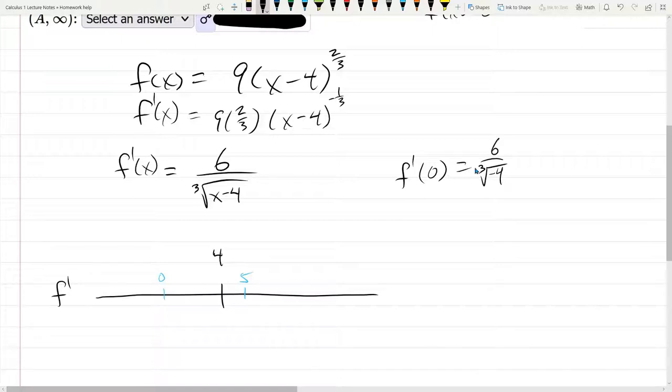Now this may scare you, it just scared me for a second because we have a root of a negative. However, we have an odd root of a negative, so we're just fine. And the third root of negative 4 is a negative number. And we're dealing with 0 right now, so that means we're negative on this interval. That means our original function is decreasing.